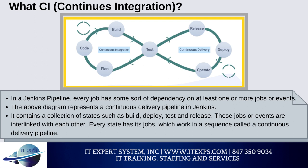A continuous delivery pipeline is an automated expression showing your process for getting software from version control. Every change made in your software goes through a number of complex processes on its way to being released. It also involves developing the software in a repeatable and reliable manner, and progression of the built software through multiple stages of testing and deployment.